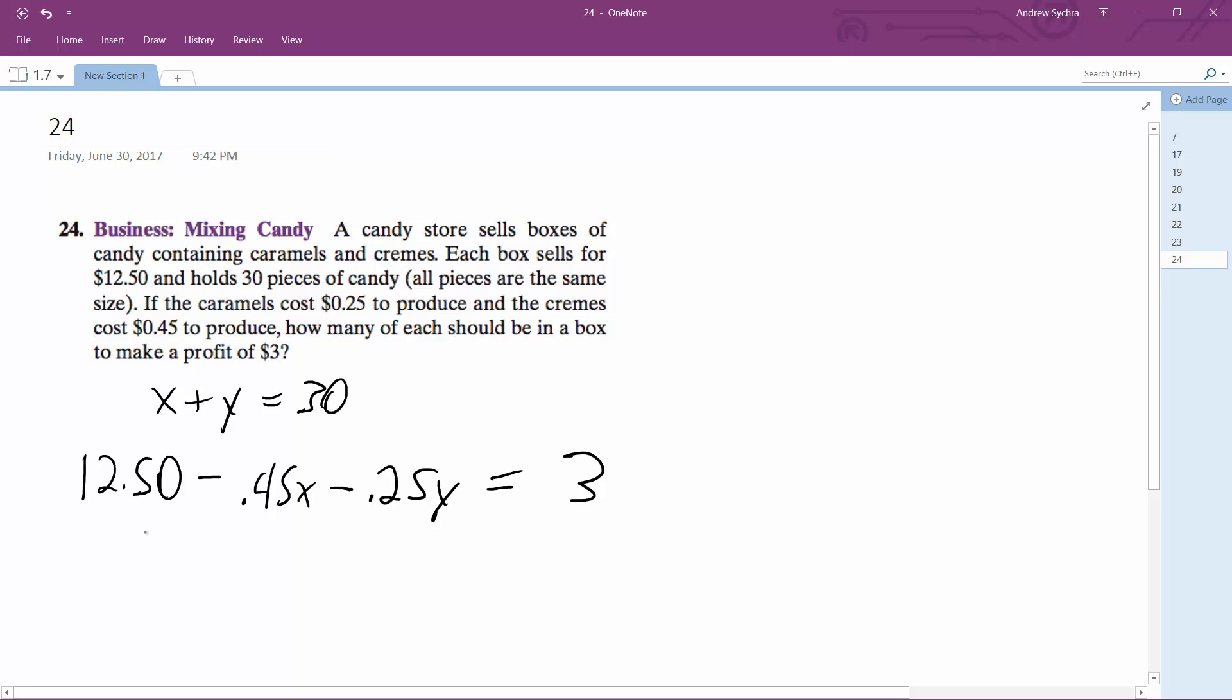So I'll just sub in, I'll make y equal to 30 minus x. So I get 12.50 minus 0.45x minus 0.25 times 30 minus x equals 3.